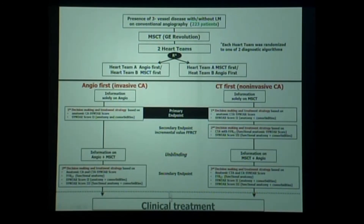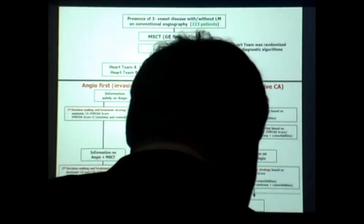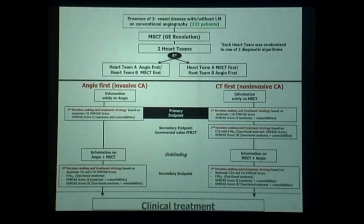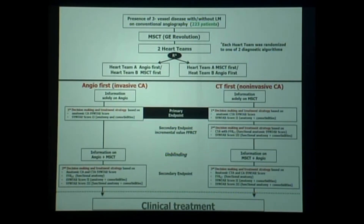We can see what is the incremental effect of conventional angiography after the non-invasive workup. In the other arm, you have only the angiography — you take the decision on Syntax score and comorbidity, but at the end you are unblinded and get the multi-slice CT scan. This is really trying to enter a new era. I think I will come back with pleasure to Rio de Janeiro three, four, five years from now and see how many surgeons are going to operate only on the multi-slice CT scan — because that's the goal, and I think we are getting closer and closer.